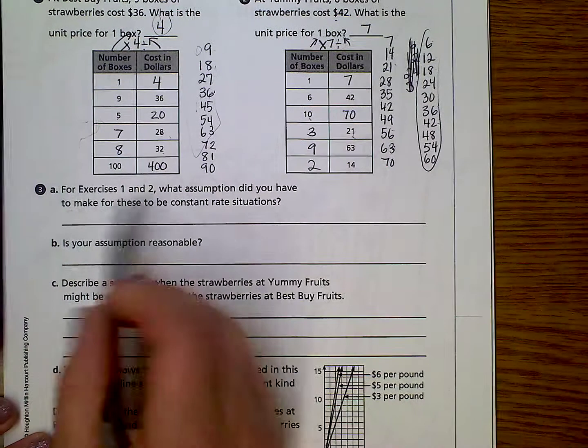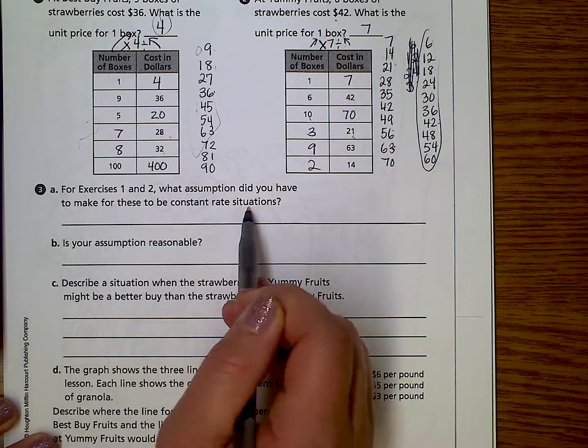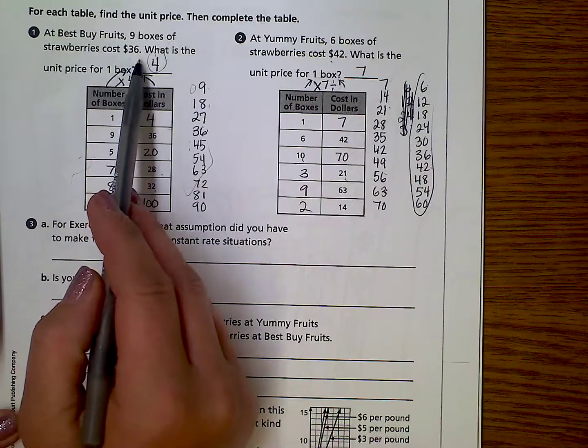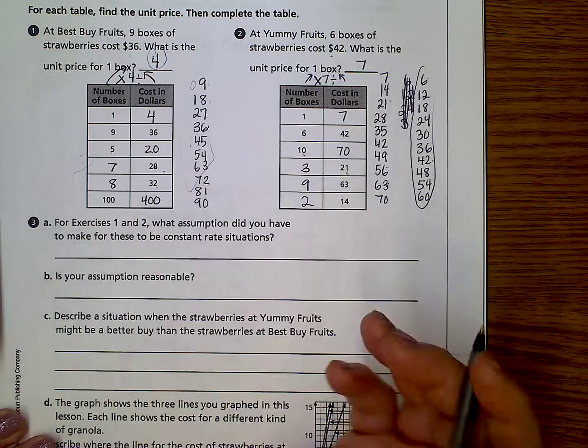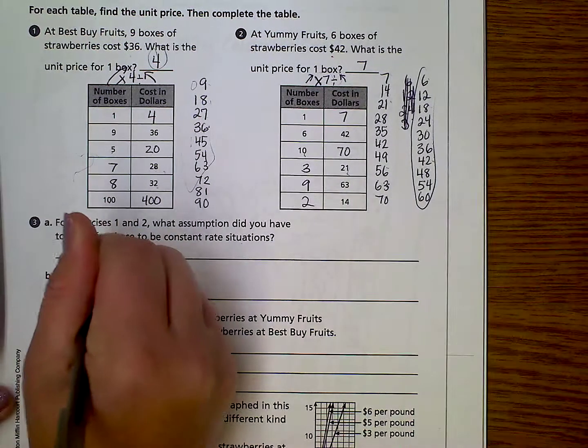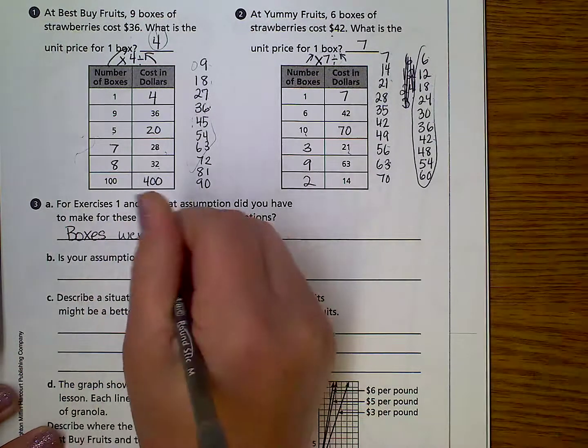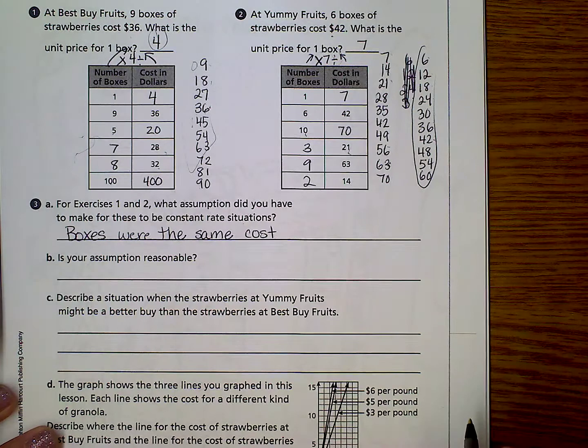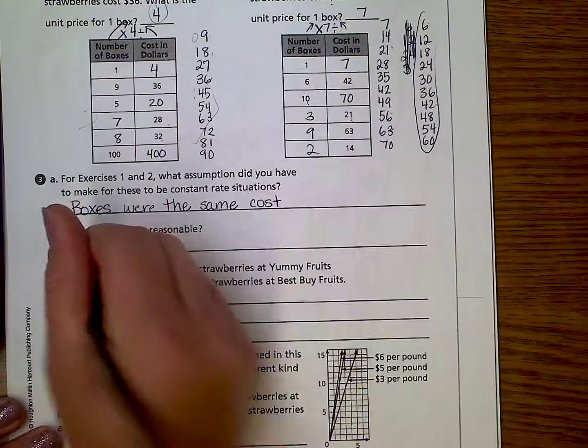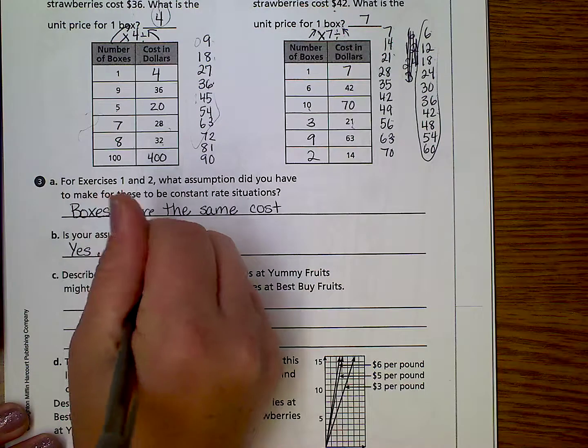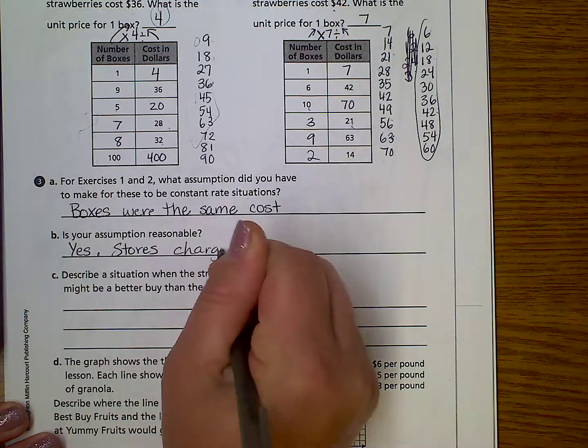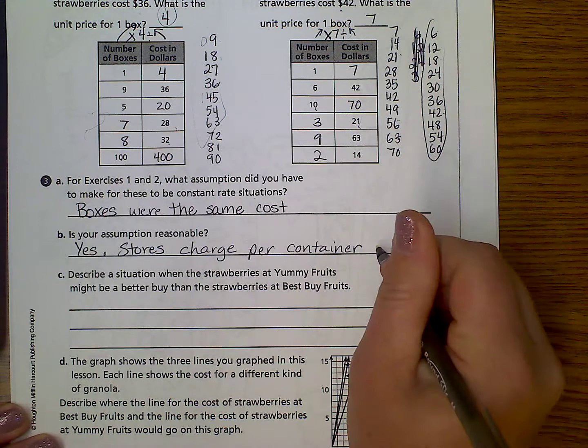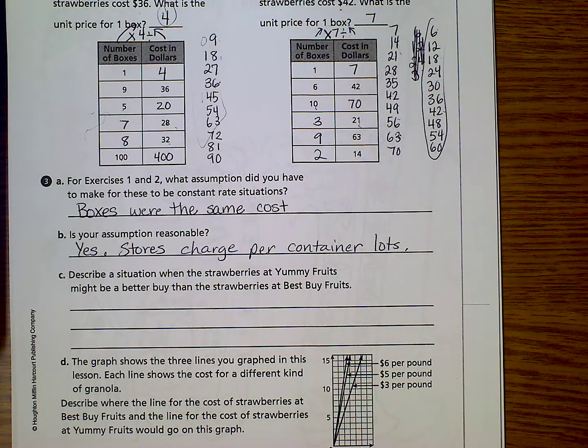So, for exercises 1 and 2, what assumption do you make for these to be a constant rate situation? Well, in all of these, we're assuming that the fact that they paid $36 for 9 boxes wasn't because they were getting a deal, or it wasn't because one box was big and one box was small. So, boxes were the same. The same cost, and that didn't change. Is your assumption reasonable? Yes. At the store, they charge things per container all the time. Stores charge per container all the time. Not always. I'm just going to say lots because I wouldn't say all the time. Most, some of the time.